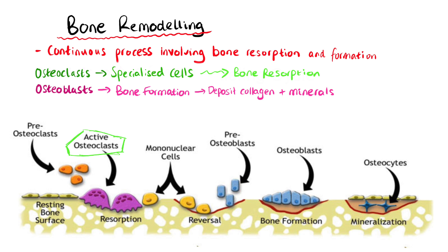Osteoblasts are responsible for bone formation. They synthesise new bone tissue by depositing collagen and minerals in a controlled manner. Bone remodelling occurs at microscopic sites called remodelling units, which consist of osteoclasts and osteoblasts working together.